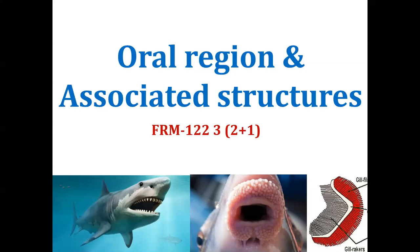In the previous class of anatomy we discussed what is anatomy and the external anatomical characters — the external anatomy of the fish where we talked about the shape, symmetry, and external features like scales, skin, and fins. Now today we will start the topics which come under the internal anatomy of fishes, and the first topic is the oral region and associated structures.